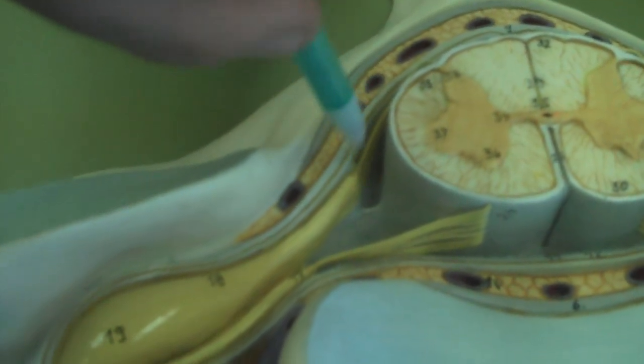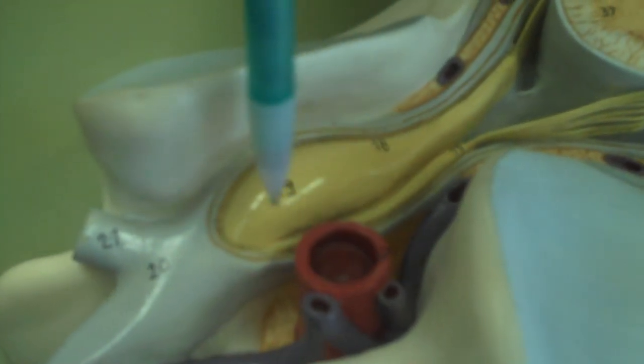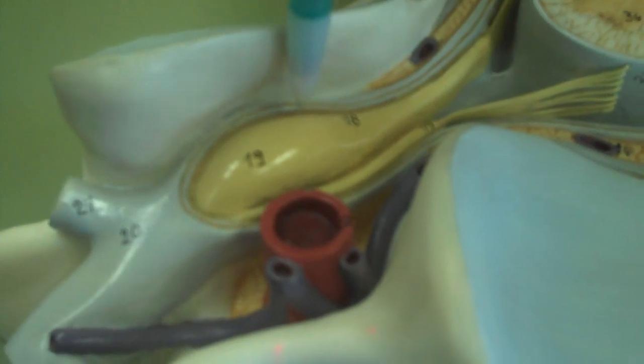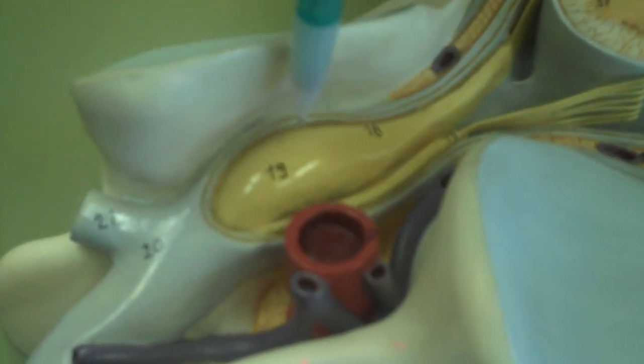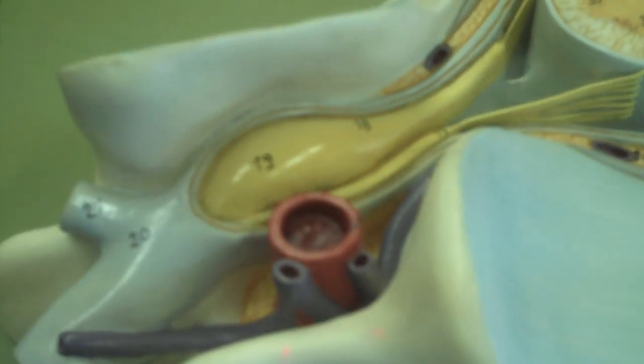When they come out, eventually all form together and form this giant yellow ball. This giant yellow structure is the dorsal root ganglion, also known as the spinal ganglion or the sensory ganglion. And that's it for the spinal cord model.